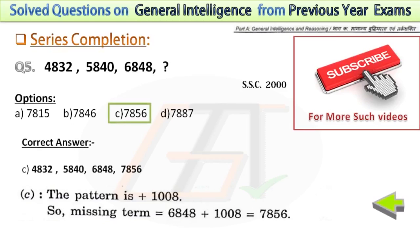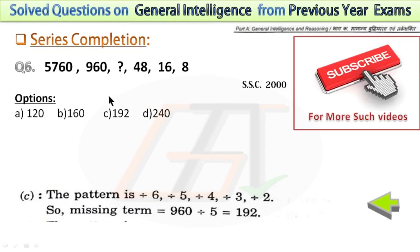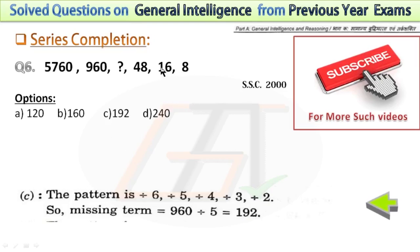In the sixth problem, the series is a division series. I have shown the pattern in the explanation. Following this pattern, you can solve the missing term. You can also solve the series another way: 18 to 16, 16 to 48, and 48 to 192.